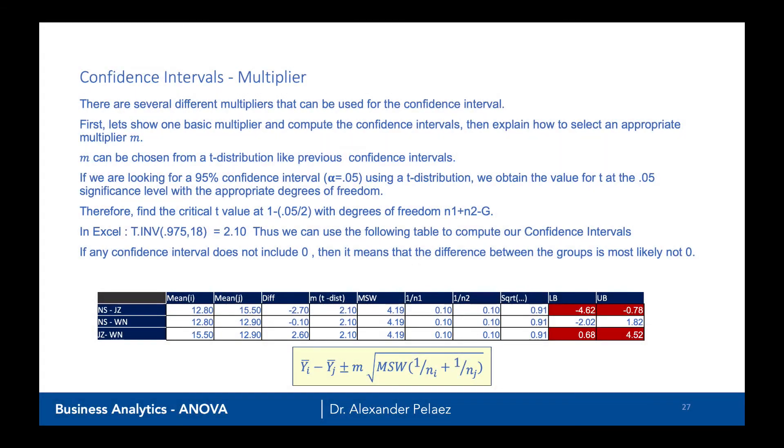Using a standard T statistic for M, we're going to call this the no correction method. If we're looking for a 95% confidence interval using the T distribution, we remember from previous modules, we can obtain the value for T at the 0.05 level. This critical value is basically determined as 1 minus 0.05 divided by 2.